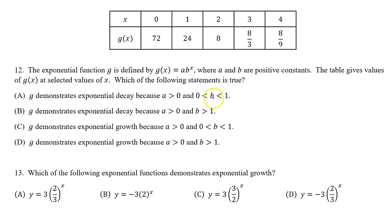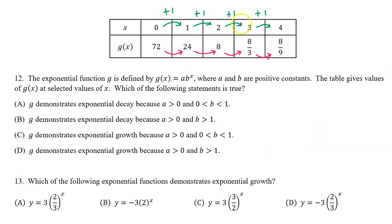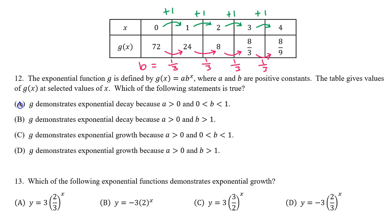So we need to see if b is between zero and one, in which case we are looking at exponential decay, or whether b is greater than one — that's when you have exponential growth. For equal length input value intervals, the b value will be the common ratio between the output values. So let's divide each output value by the previous output value to find the value of b. 24 divided by 72 reduces to one-third. Similarly, 8 divided by 24 is one-third, and so on. So that's your b value, and we can see that the b value is between zero and one. So this is exponential decay, and the answer is A.